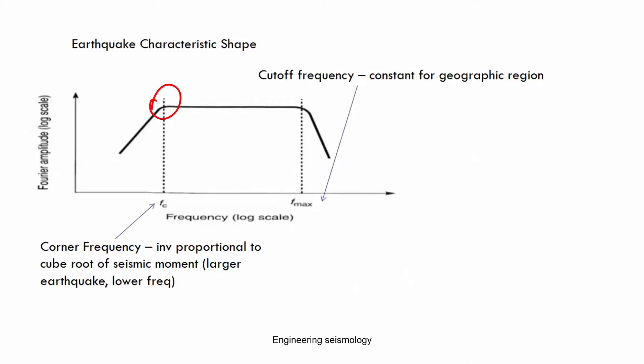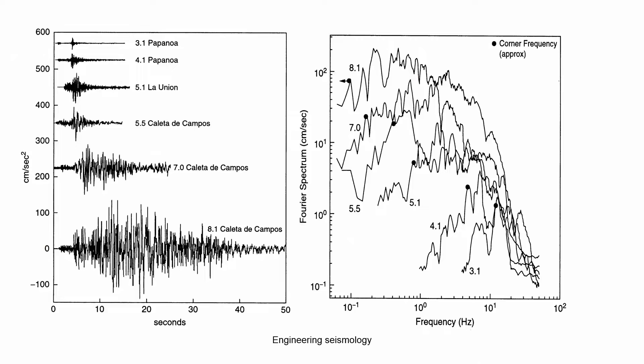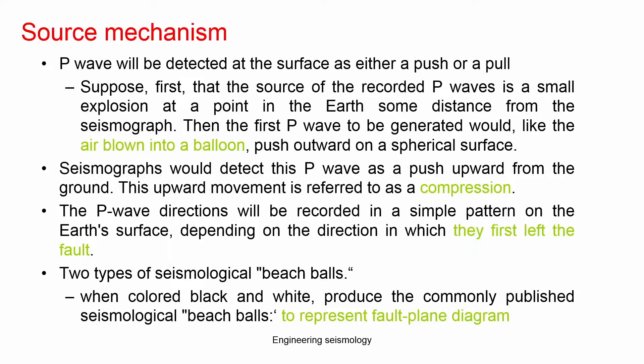The cutoff frequency is basically constant for the geographical region — this is the F_max. This is basically different earthquake recorded data showing how the corner frequency changes from lower magnitude to higher magnitude, which is a function of seismic moment and, in turn, seismic magnitude. We also talked about the predominant frequency and related things.